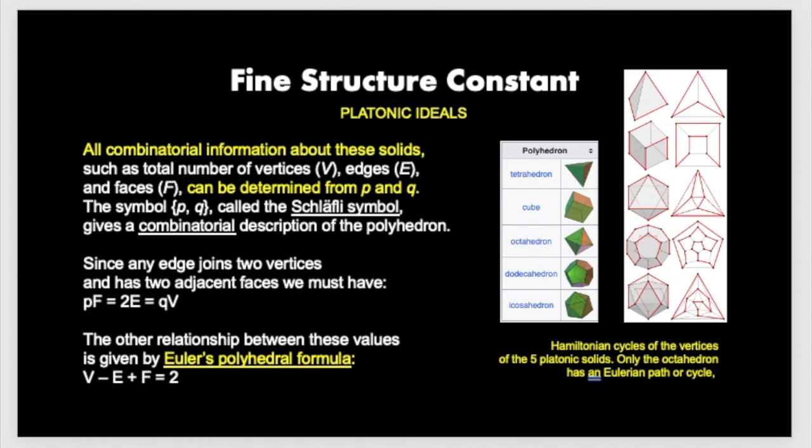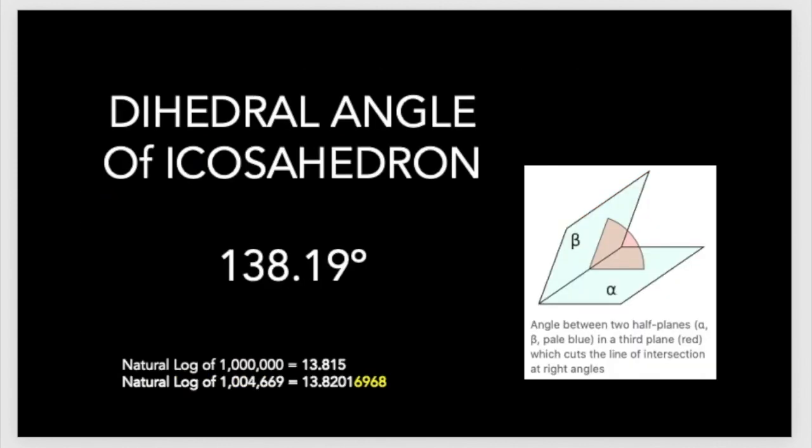As you can see on the right, Hamiltonian cycles of the vertices of the five platonic solids, only the octahedron has an Eulerian path or cycle. I just want to point out that the dihedral angle of the icosahedron is 138.19,